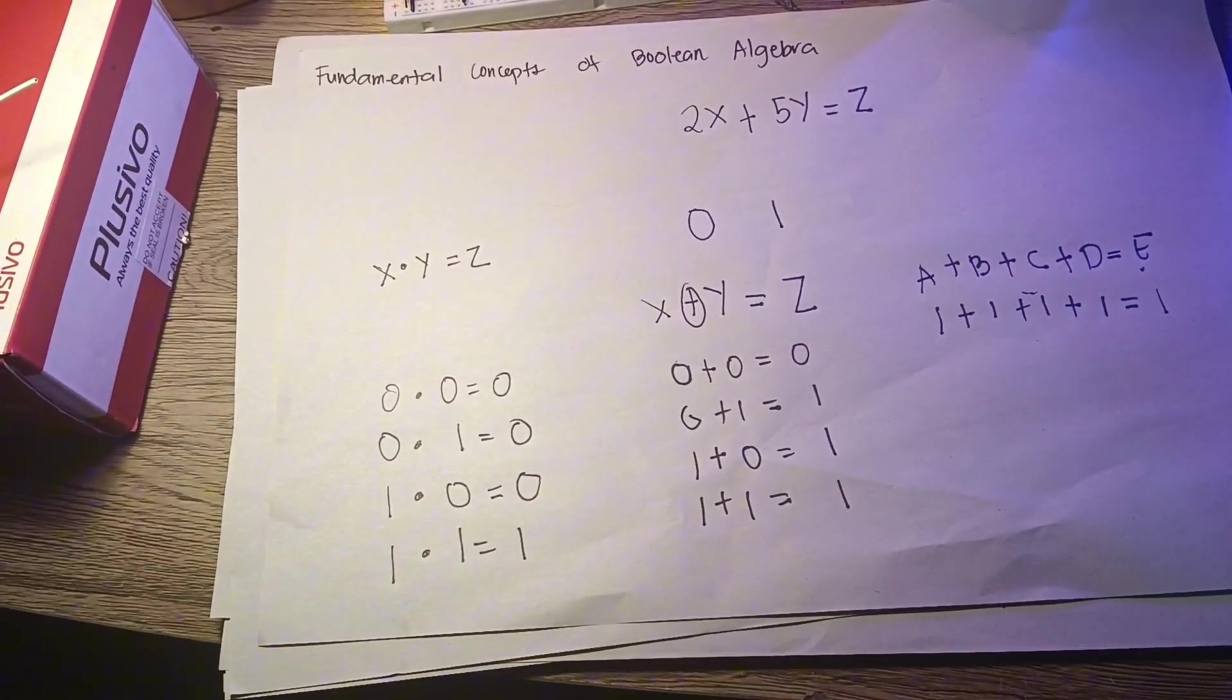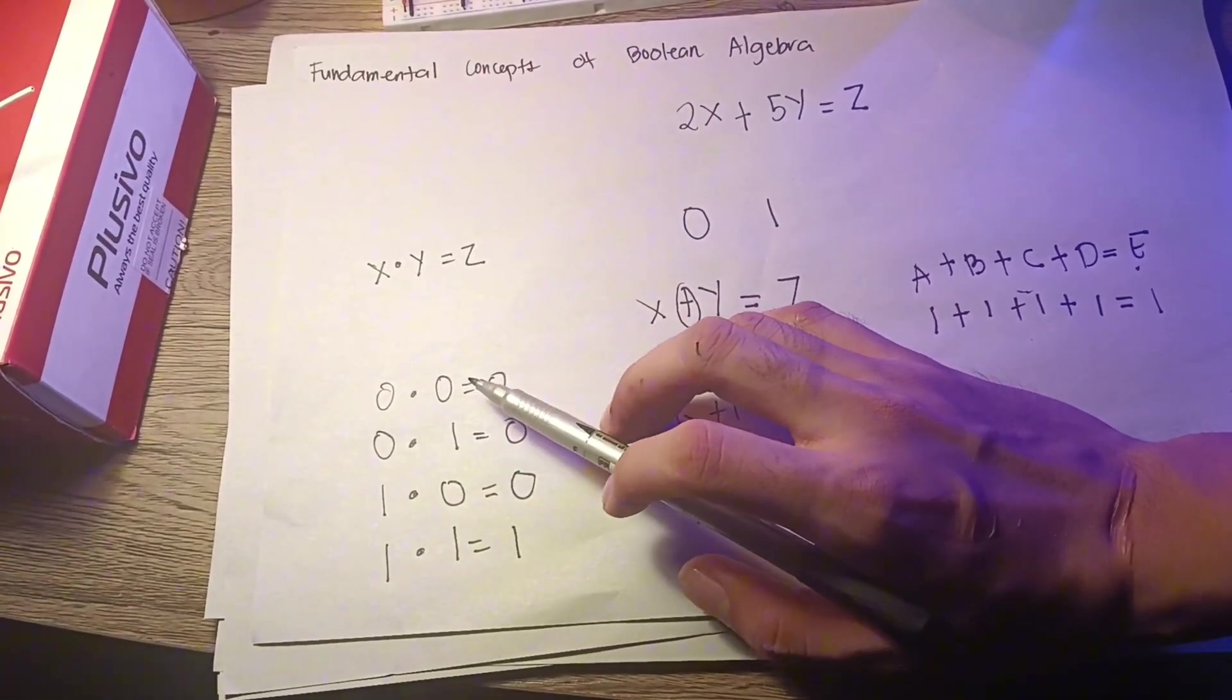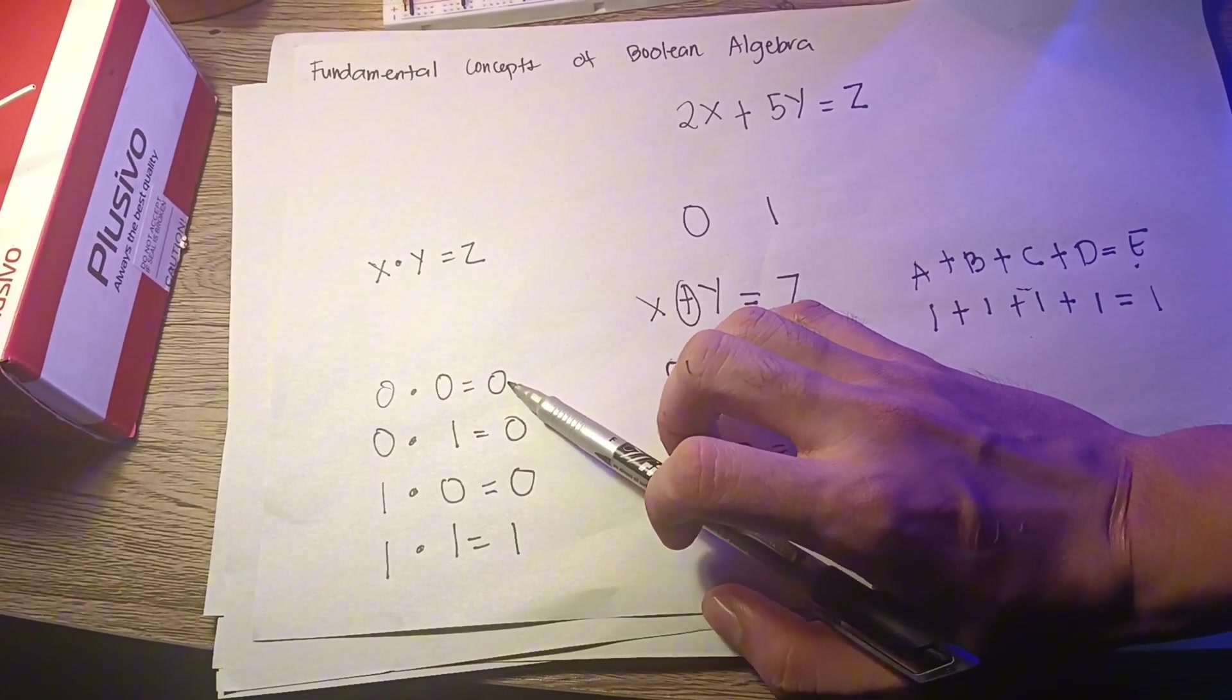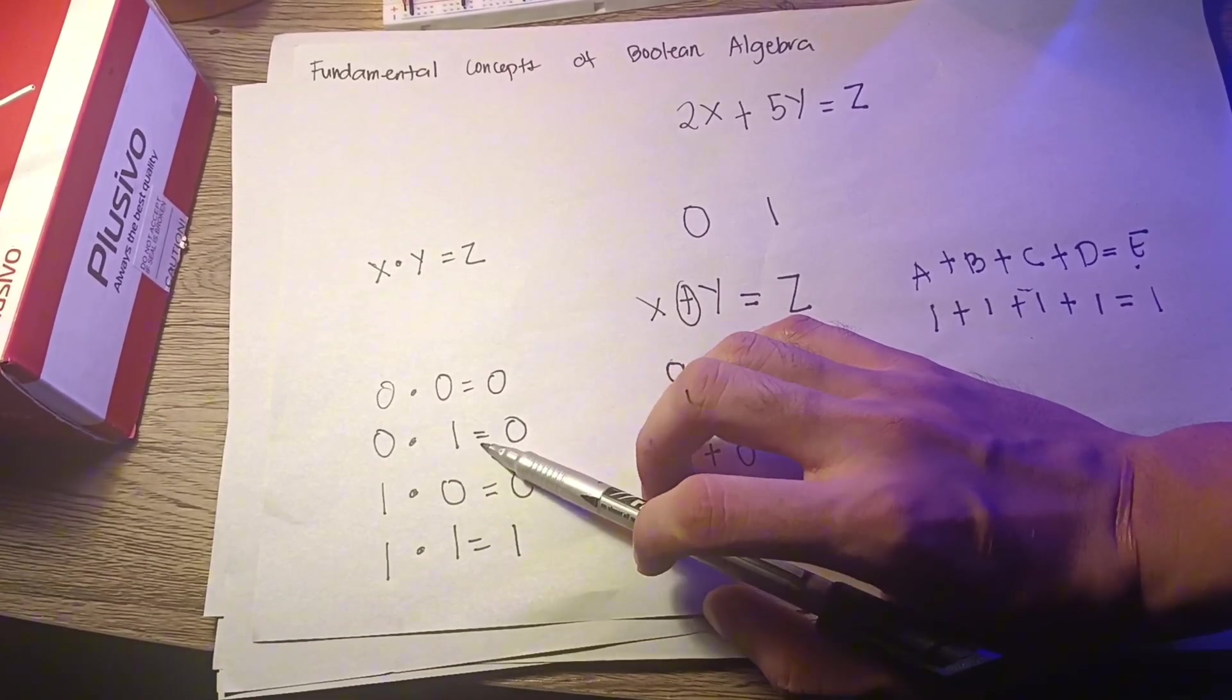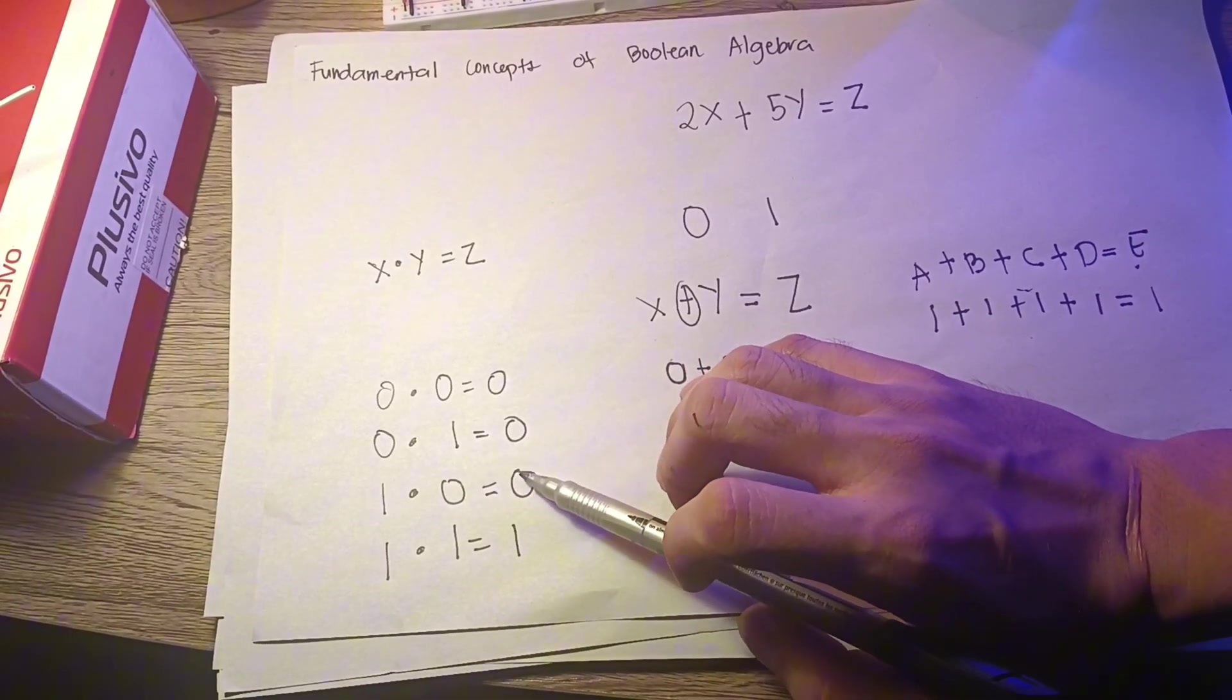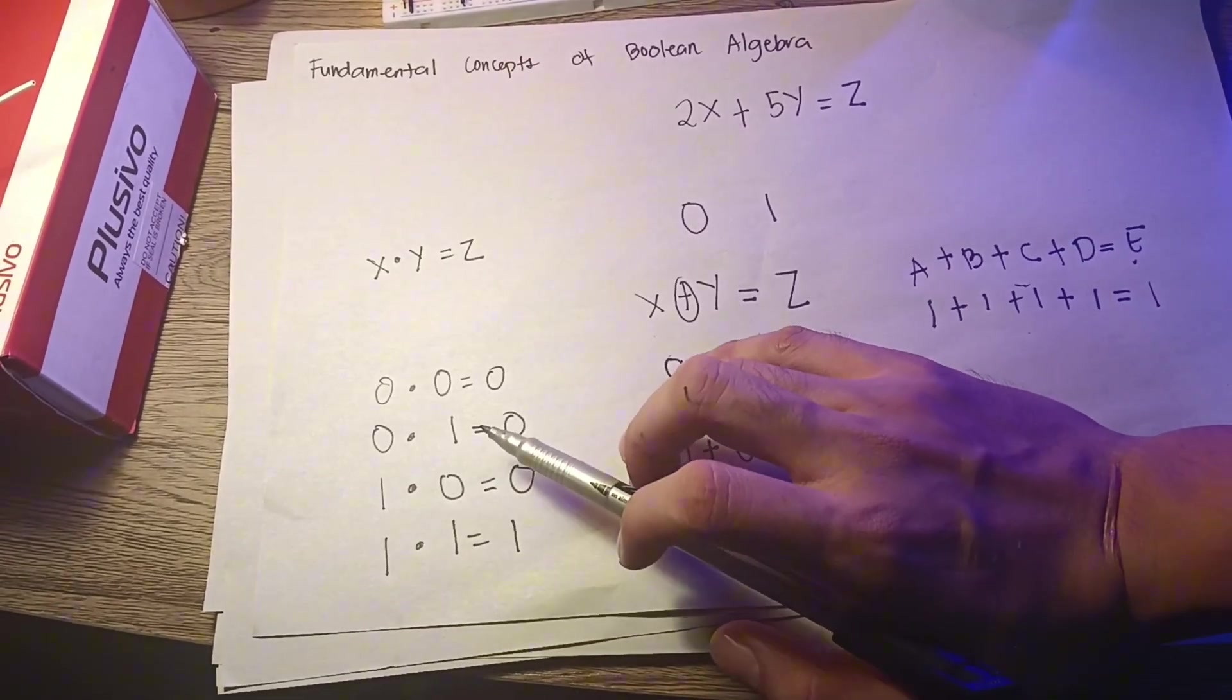The rules for logical multiplication can again be given by simply listing all values which might occur: 0 times 0 equals 0, 0 times 1 equals 0, 1 times 0 equals 0, 1 times 1 equals 1.